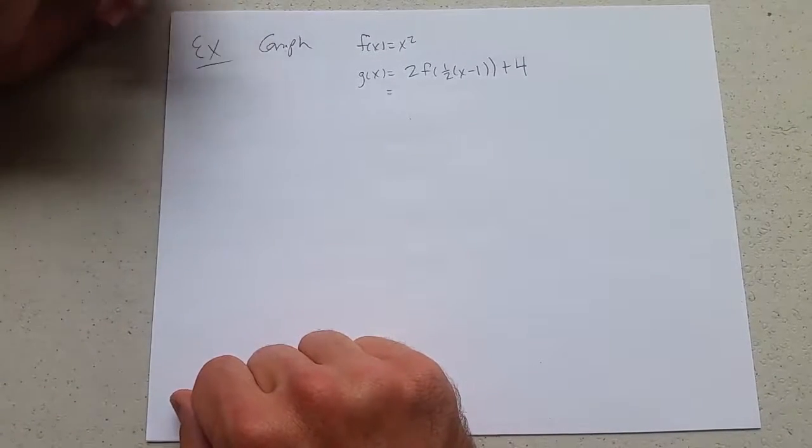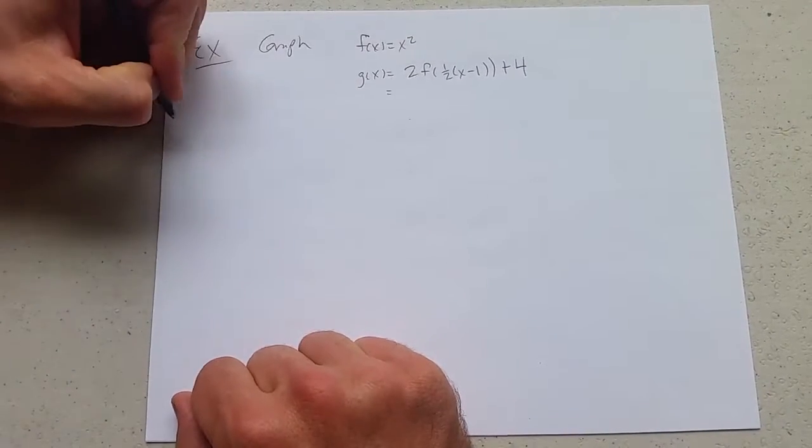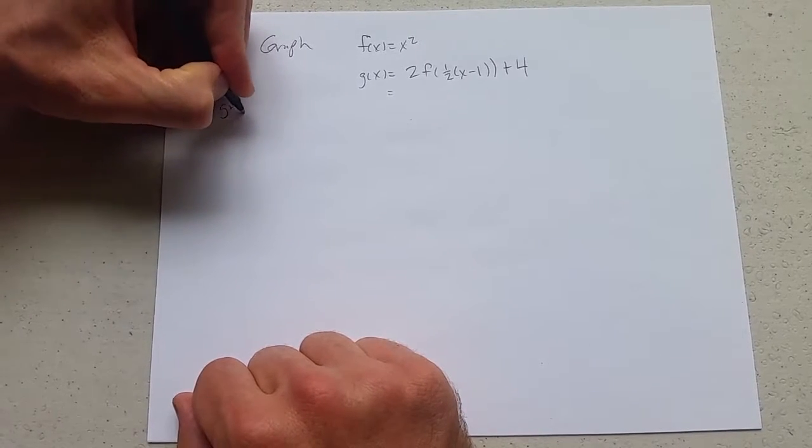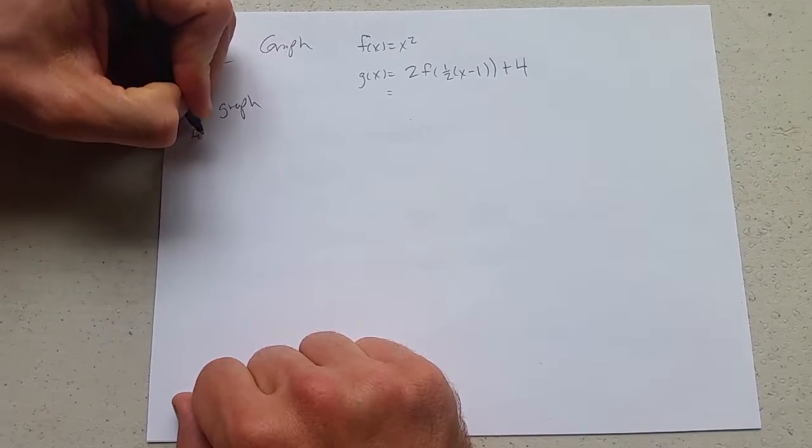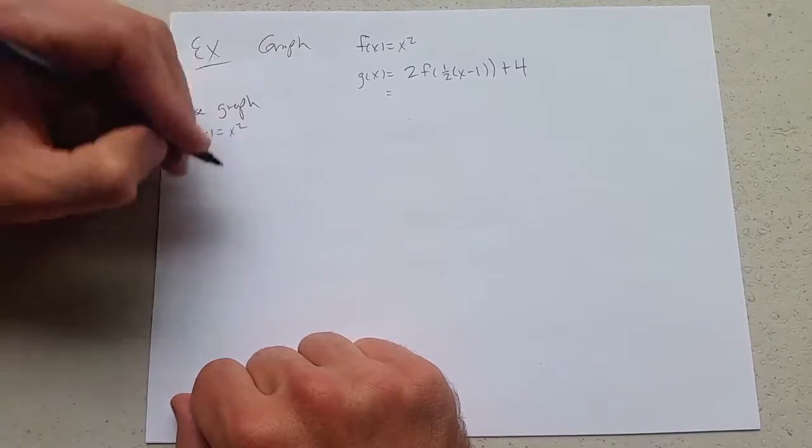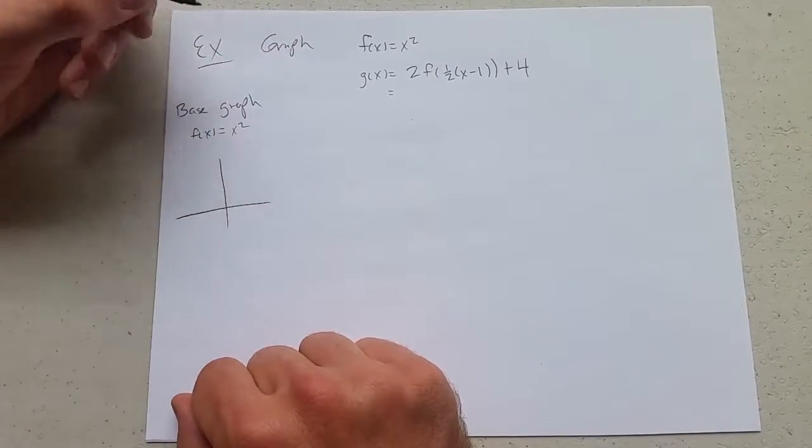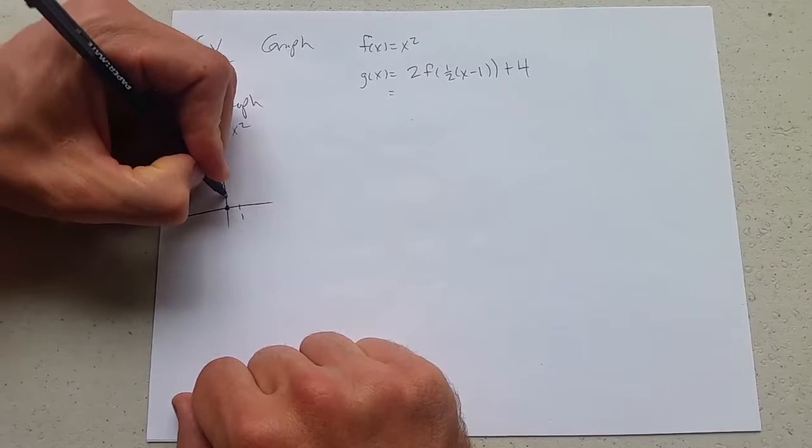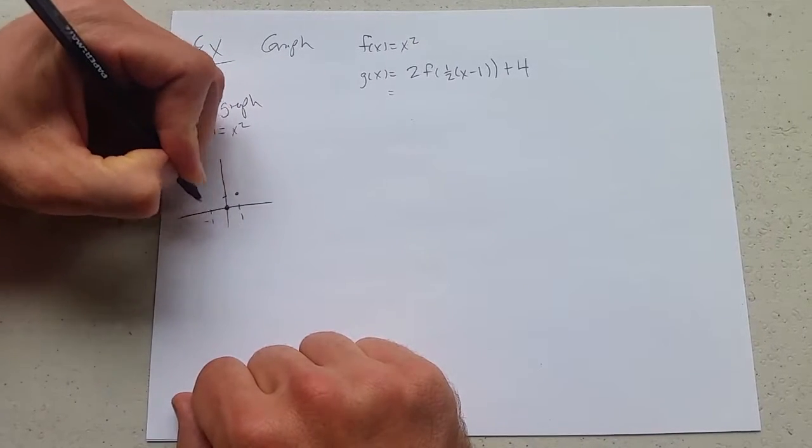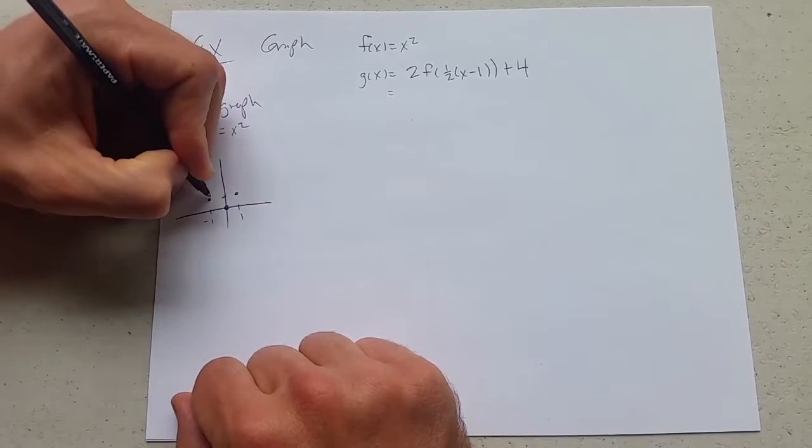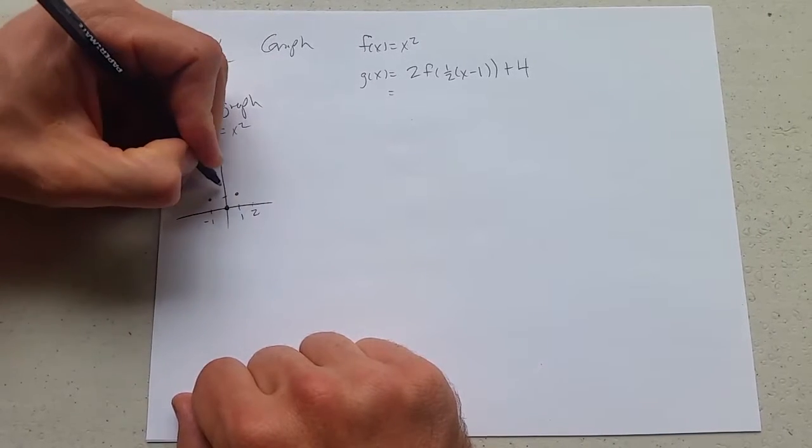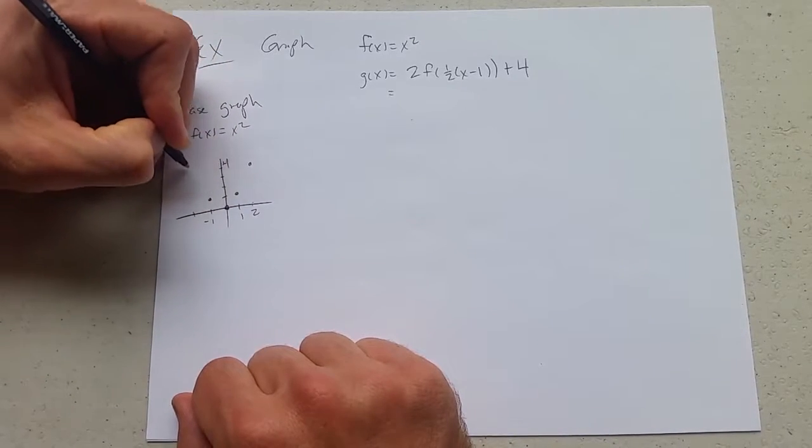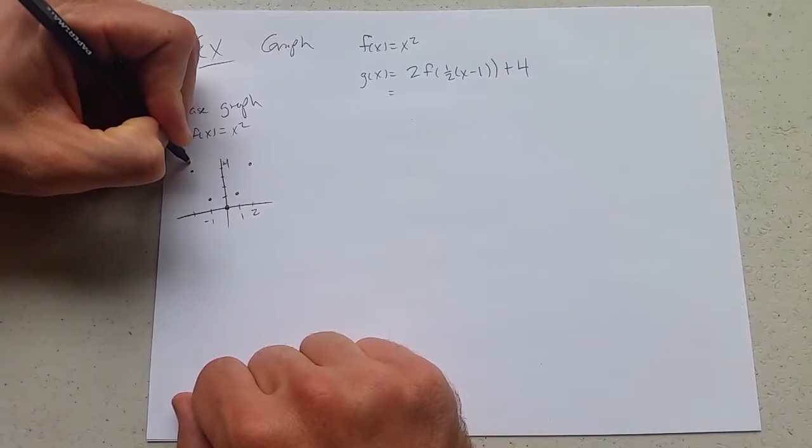We're going to graph this function f(x) = x² beginning with our base graph. If we make a table, we plug in zero and get out zero, plug in one we get out one, negative one gives positive one, plug in two get out four, negative two also gives positive four.